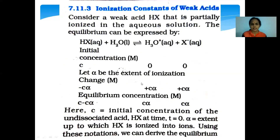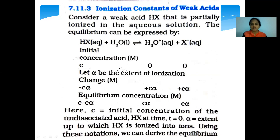H₃O⁺ and X⁻ are zero moles per liter initially. Let alpha be the extent of ionization; then the change in Hx is equal to -Cα, and H₃O⁺ as well as X⁻ formed is equal to Cα. Equilibrium concentration of Hx equals C - Cα, and equilibrium concentration of H₃O⁺ and X⁻ equals Cα. C is the initial concentration of undissociated acid Hx, and alpha is the extent to which Hx is ionized into ions.